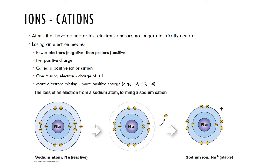Ions are charged atoms. Cations are atoms that have gained or lost an electron, making them no longer electrically neutral. Losing an electron means fewer negative charges than positive protons, giving an overall net positive charge. If we have a positively charged ion, it is known as a cation. For example, the loss of an electron from a sodium atom forms a sodium cation with a positive charge.